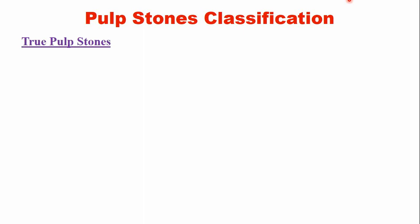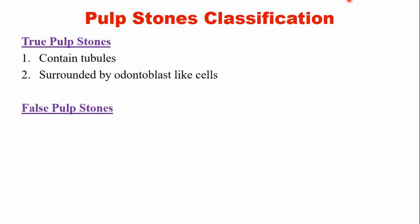There are several ways of classifying the pulp stones. One classification is true pulp stones and false pulp stones. True pulp stones are those that contain dentinal tubules, and those stones are surrounded by odontoblast-like cells.